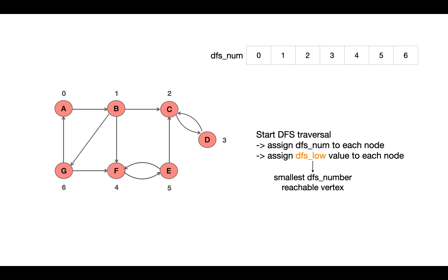Like here, for vertex B, the DFS_low value will be 0 because it's the node A which is reachable from node B and having the minimum DFS number.